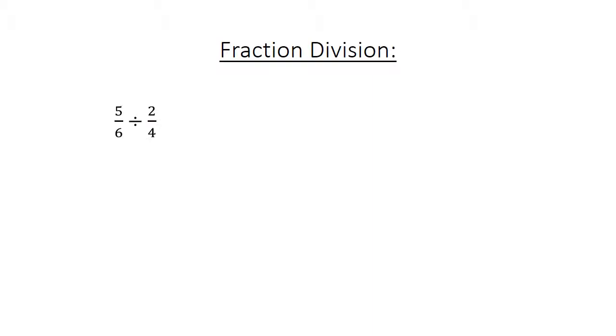Fraction division. 5 over 6 divide by 2 over 4 equals 5 over 6 times 4 over 2 equals 20 over 12 equals 1 and 2 over 3.